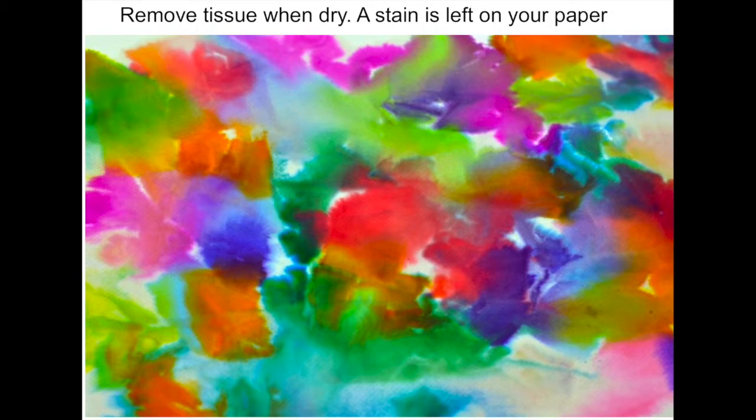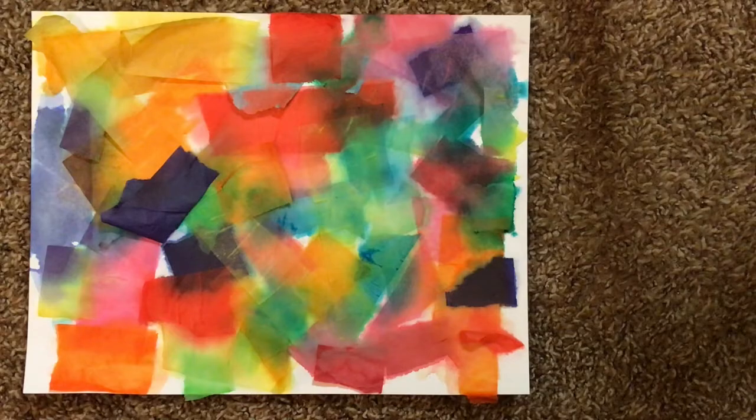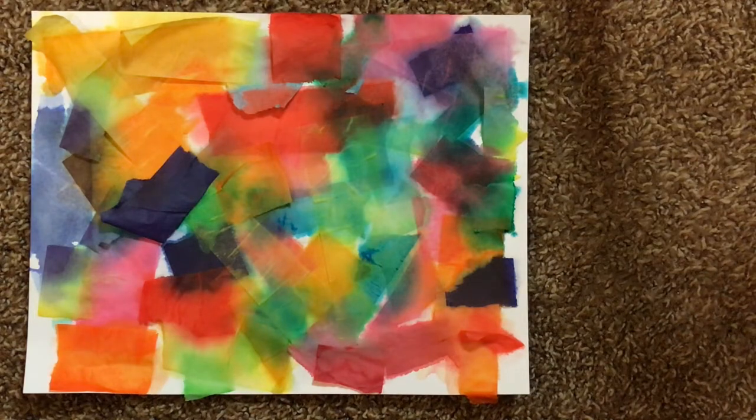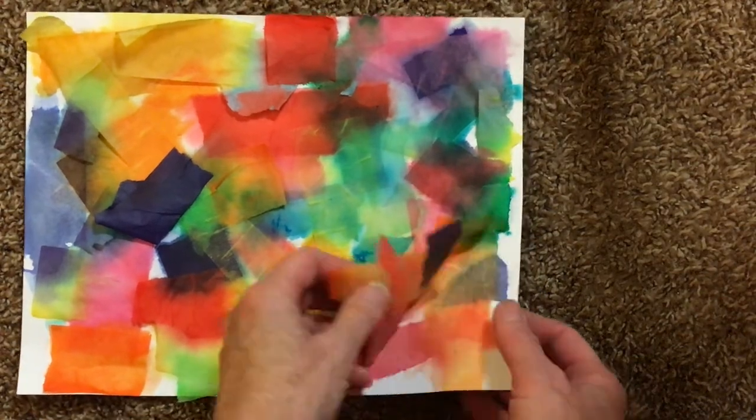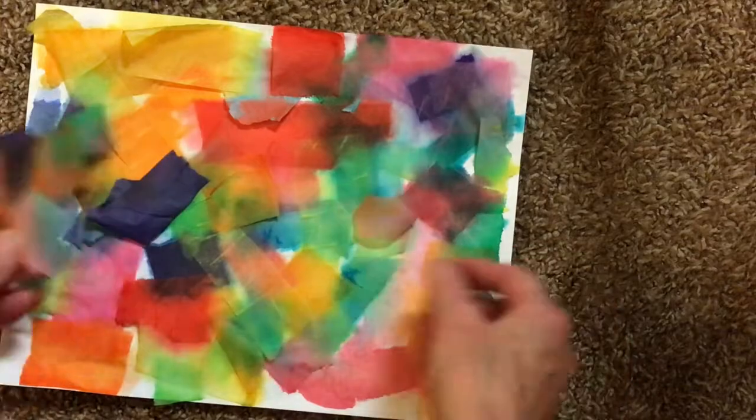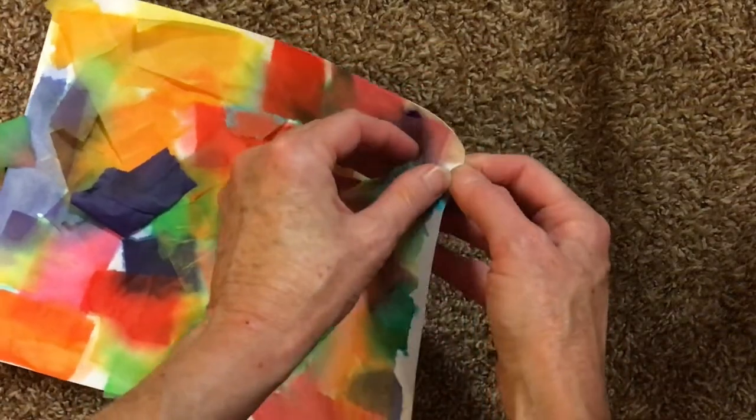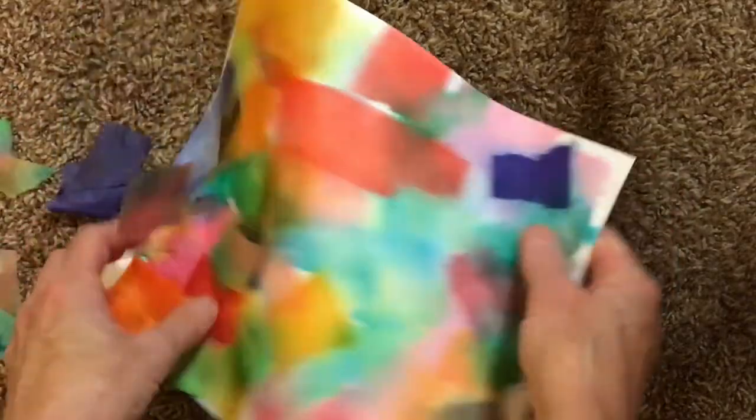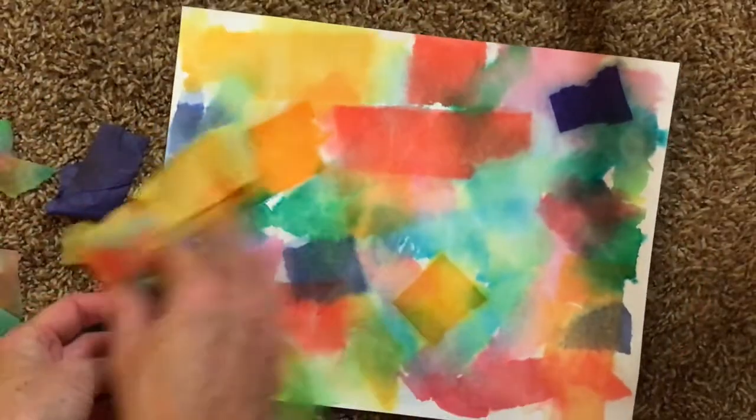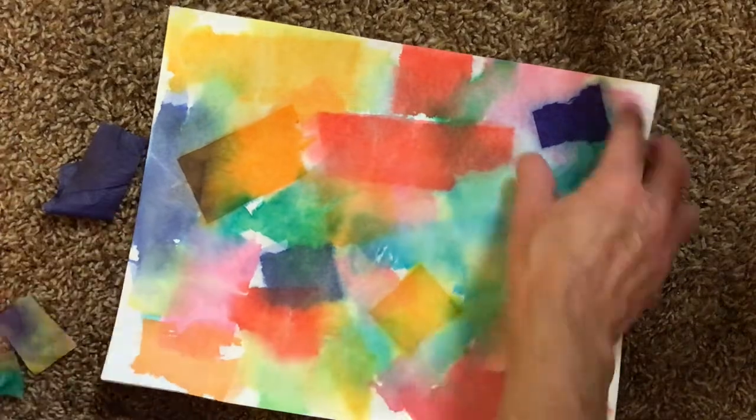Welcome back to part two of our tissue painting. You're going to take all the tissues off and look at this. Here's how it looks before I took the tissue off and when I peel them off, the colors are still on the paper. It's very soft and blended and all the colors left the tissue and attached to my white paper.